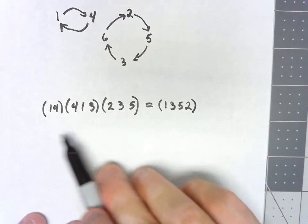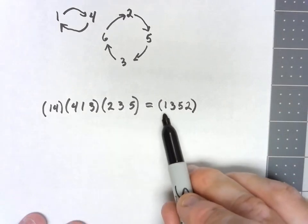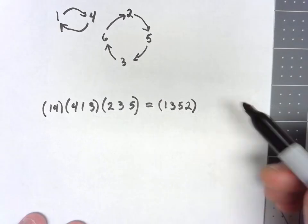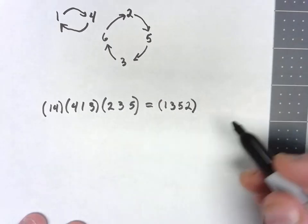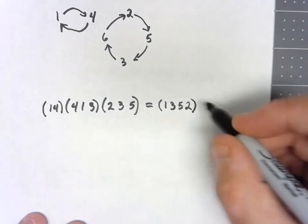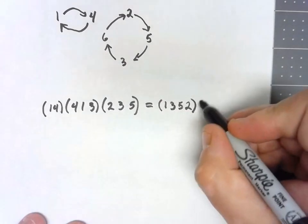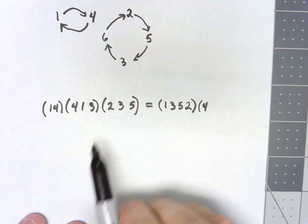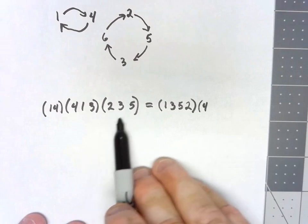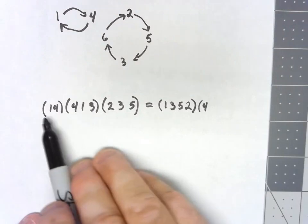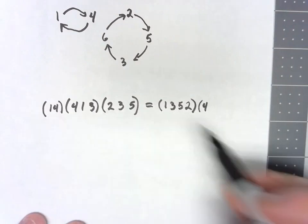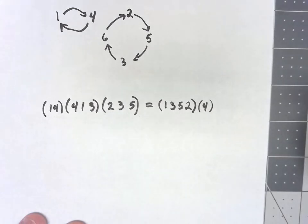So all together, by multiplying these together, I'm getting a cycle 1, 3, 5, 2. But that's not the full thing because there are other elements involved. We also have 4. Now, so I'm going to start a new cycle here. 4. 4 isn't affected by this cycle. 4 goes to 1. Here. 1 goes to 4. So it's by itself.